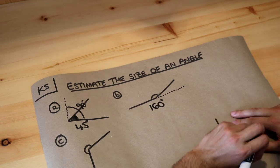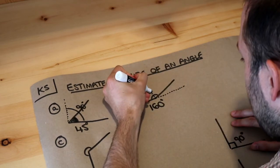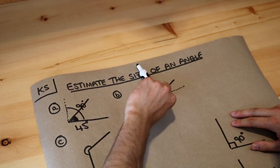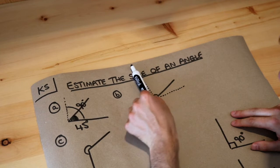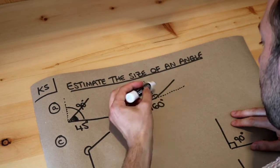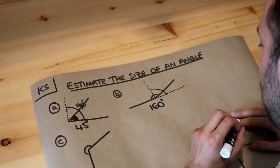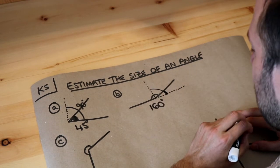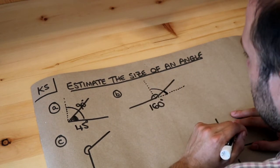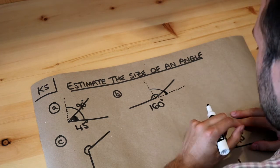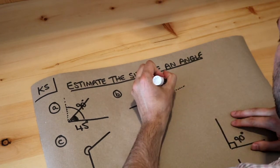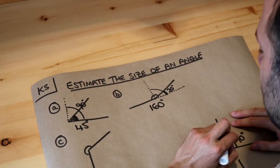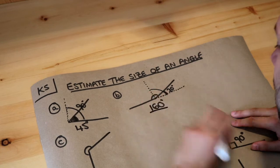Why 160 degrees? If we add an extra line, this angle here would be a right angle — 90 degrees — and this angle here would also be a right angle. This remaining bit of angle looks just slightly less than a third of 90 degrees. A third of 90 would be 30 degrees, so just a bit less would be about 20 degrees. So 180 minus 20 gives us 160 — that is our estimate.